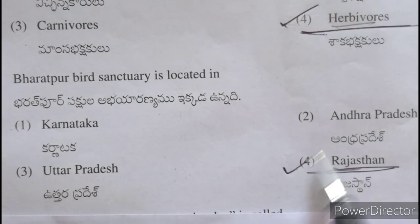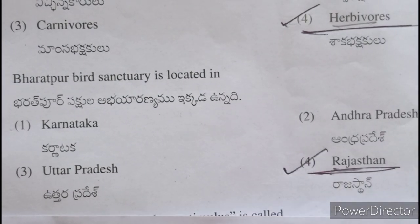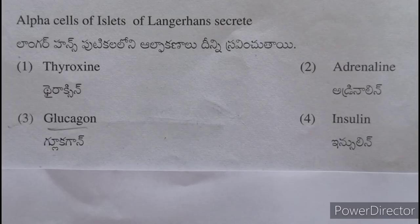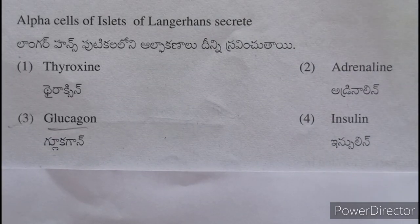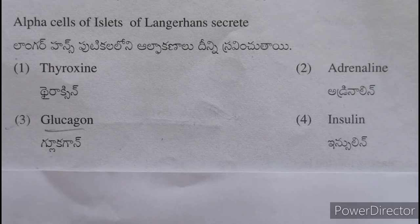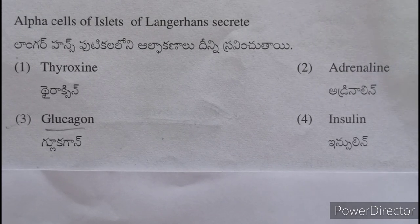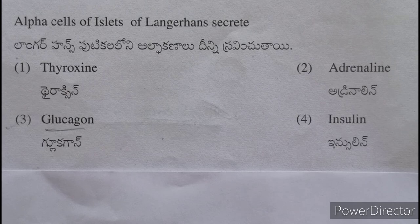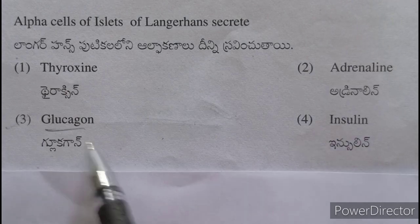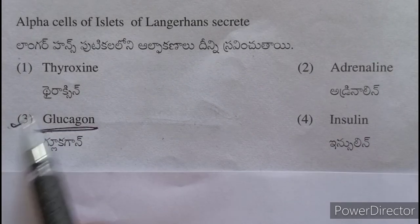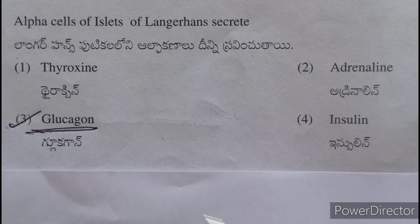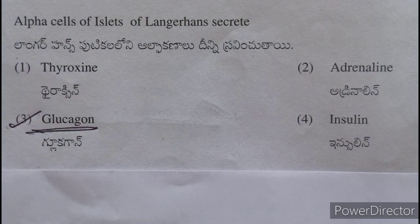The alpha cells of the islets of Langerhans secrete — Langerhans puttikal lo ni alpha kanalu dheeni sravinchu thai — glucagon. Alpha cells secrete glucagon; beta cells secrete insulin.